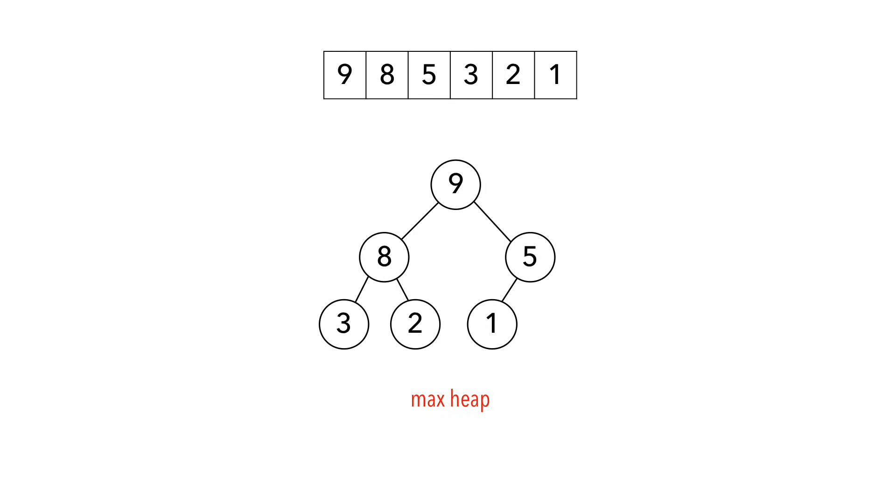Now that we have our max heap, we know the largest item, 9. We swap 9 with the item at the end of the array, 1. Finally, we remove 9 from the tree and consider it sorted.